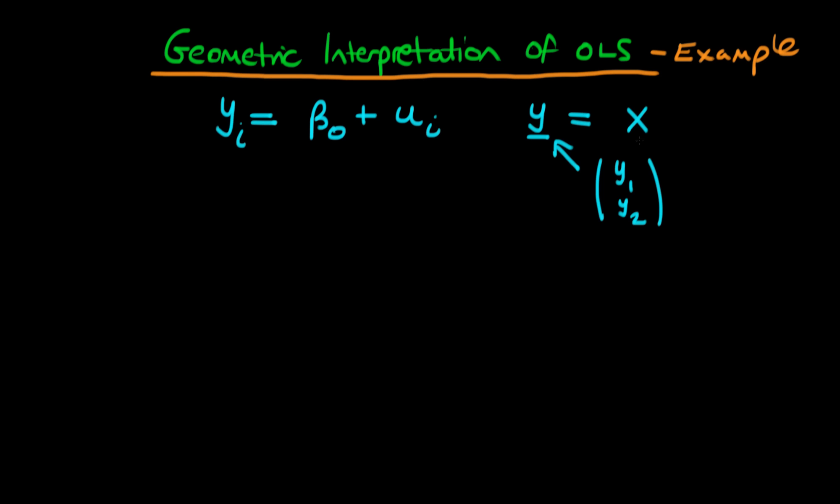Well then we can write that this is equal to X times beta, where beta here normally represents a vector, but in this example where we've only got one independent variable, essentially we don't really have any independent variables. We only have a constant, so beta is just beta 0 in this example. And then finally we have our vector of residuals u here, or errors u rather.